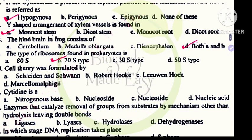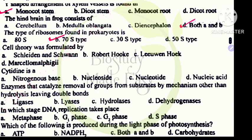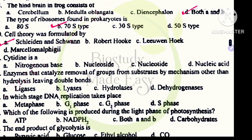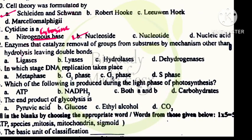Ribosomes in prokaryotes are 70S, eukaryotes are 80S. Cell theory formulae by Schleiden and Schwann. Cytidine is a nucleoside. Cytosine is nitrogen base. Nucleotide is cytidine monophosphate or triphosphate. Cytidine is nucleoside.